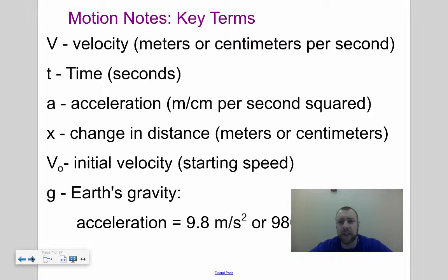Velocity, capital V, is meters or centimeters per second in this project. Typically we're going to be talking centimeters per second. T is going to be time, measured in seconds. A is acceleration, which is meters or centimeters per second squared.